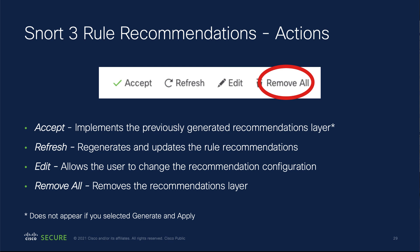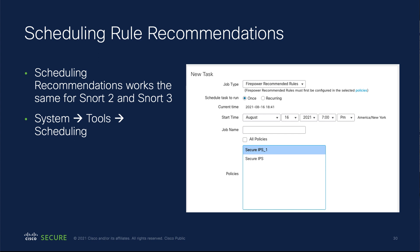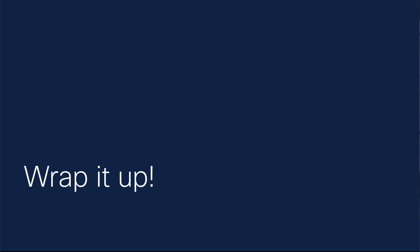Remove All removes the recommendations layer altogether, taking you back to no recommendations. I mentioned scheduling — scheduling is the same as it was previously with Snort 2. Nothing has changed in the scheduler UI. Just go in and set up a job for recommended rules, select a policy, and since each policy now has both a Snort 2 and a Snort 3 version, scheduling this will update recommendations on both versions.